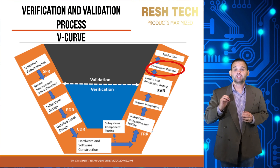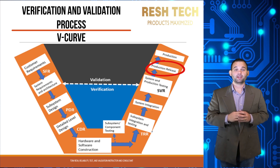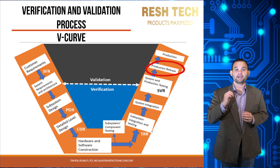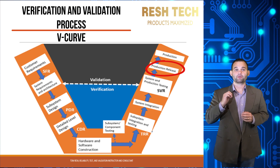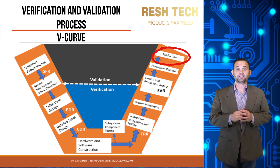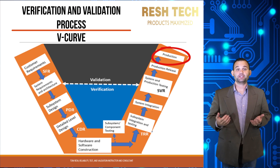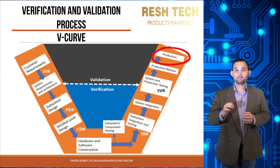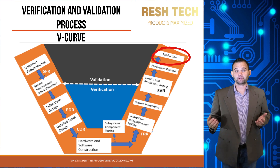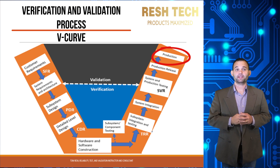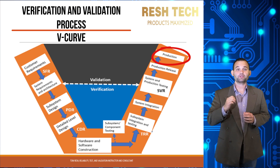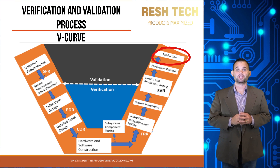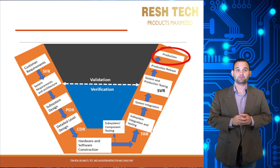Next is the production release — a final review checklist to ensure all i's are dotted and t's are crossed, and that all reports, data, and requirements have been met for production. Once the system or product exits the production release gate, it is ready for mass production and shipment to customers. Maintaining the highest level of quality and reliability is an ongoing process — checks and tests must remain in place to ensure the product continues to meet customer requirements for the life of the program after mass production release.